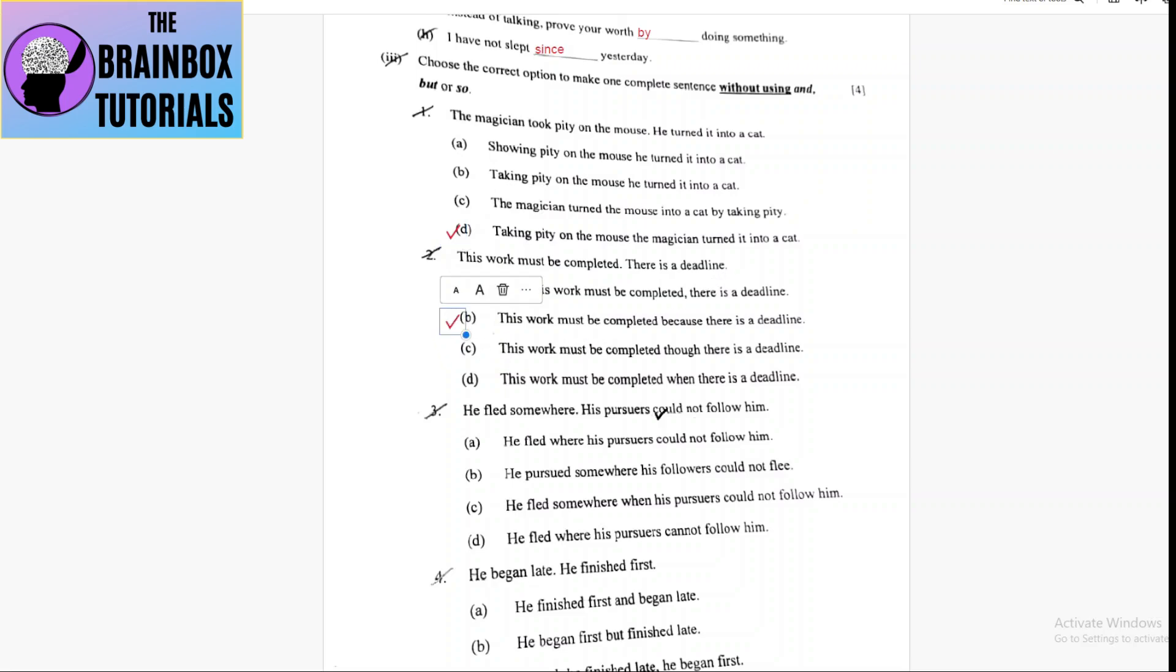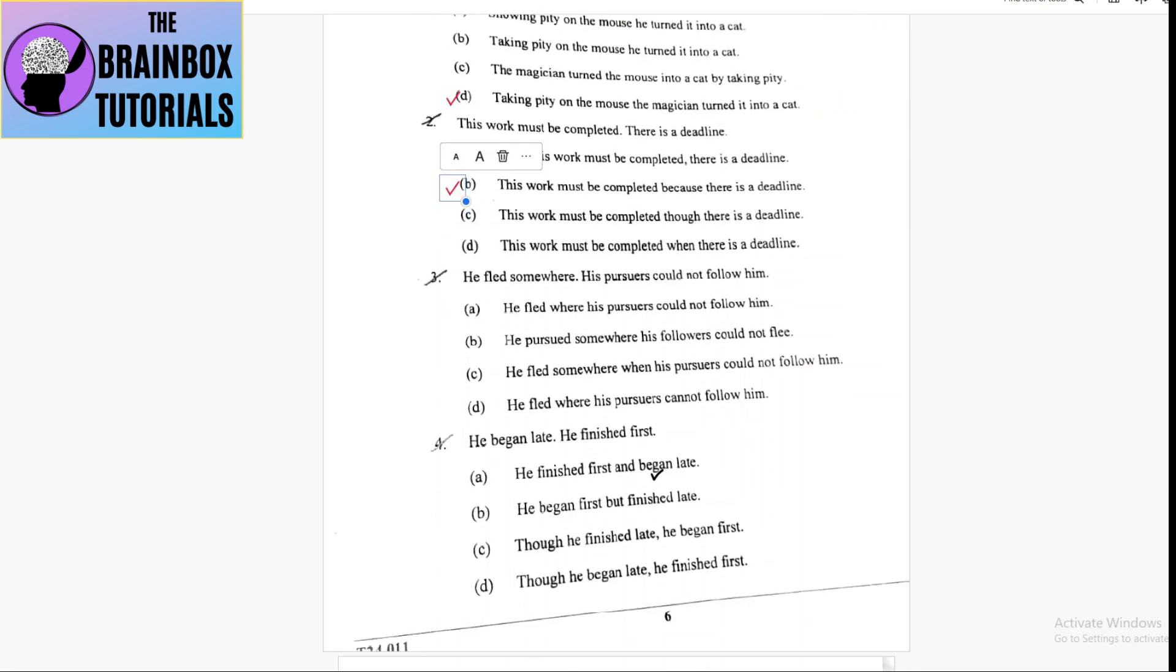Coming to number three: he fled somewhere, his pursuers could not follow him. For this, option A: he fled where his pursuers could not follow him will be the correct option.